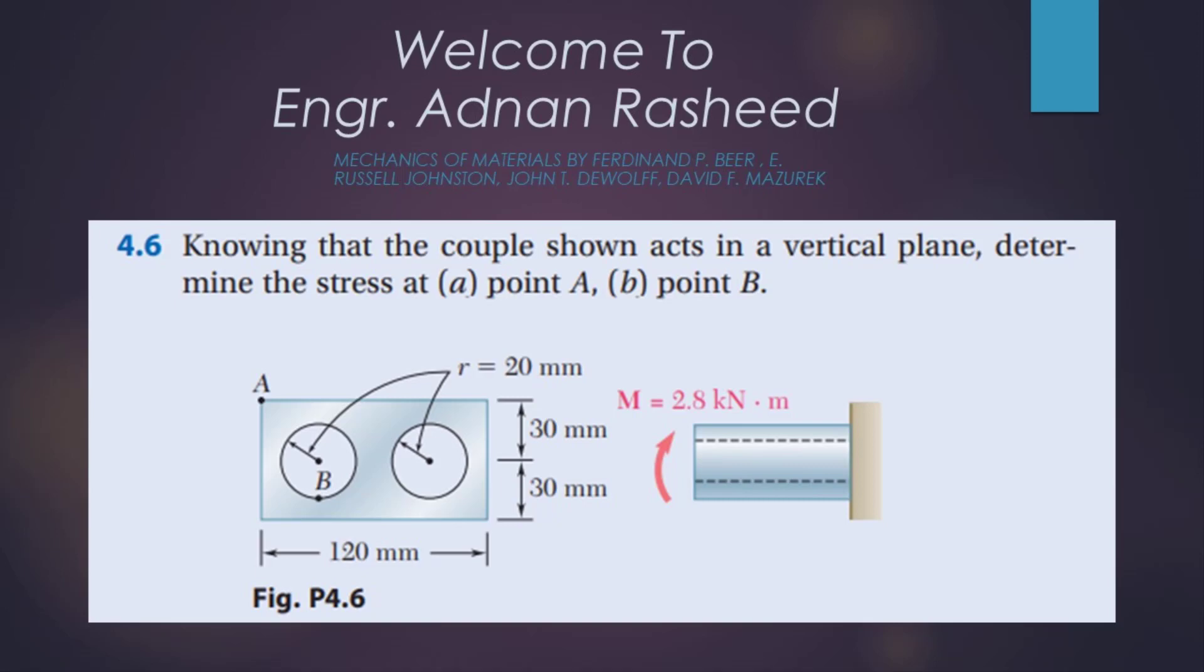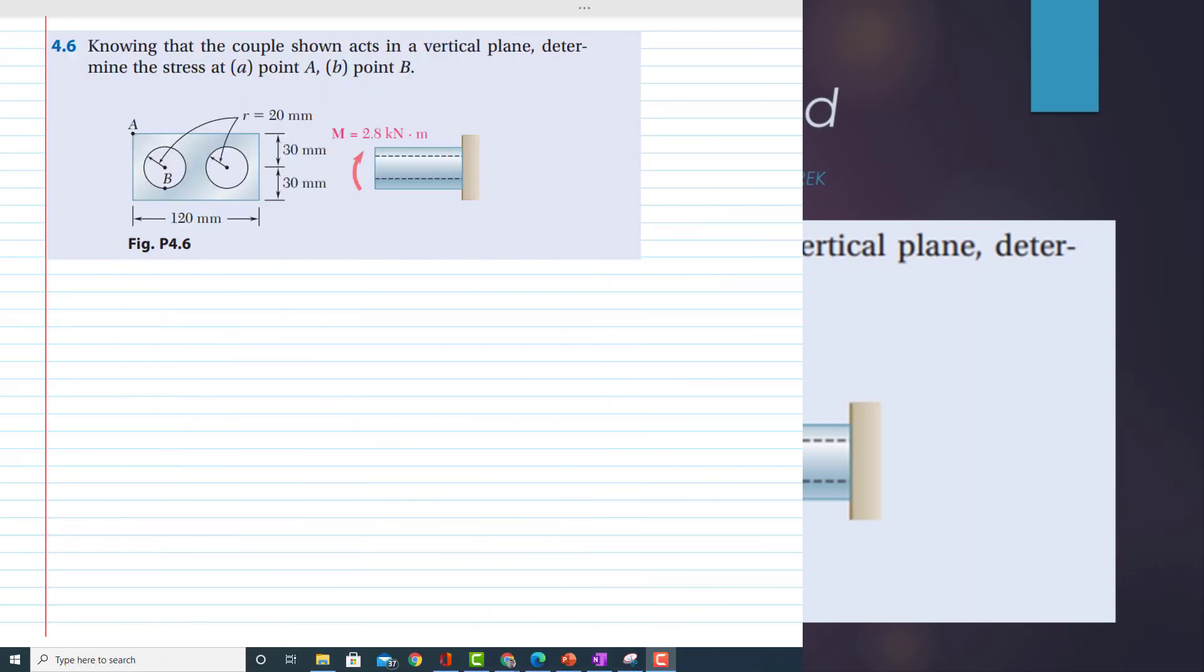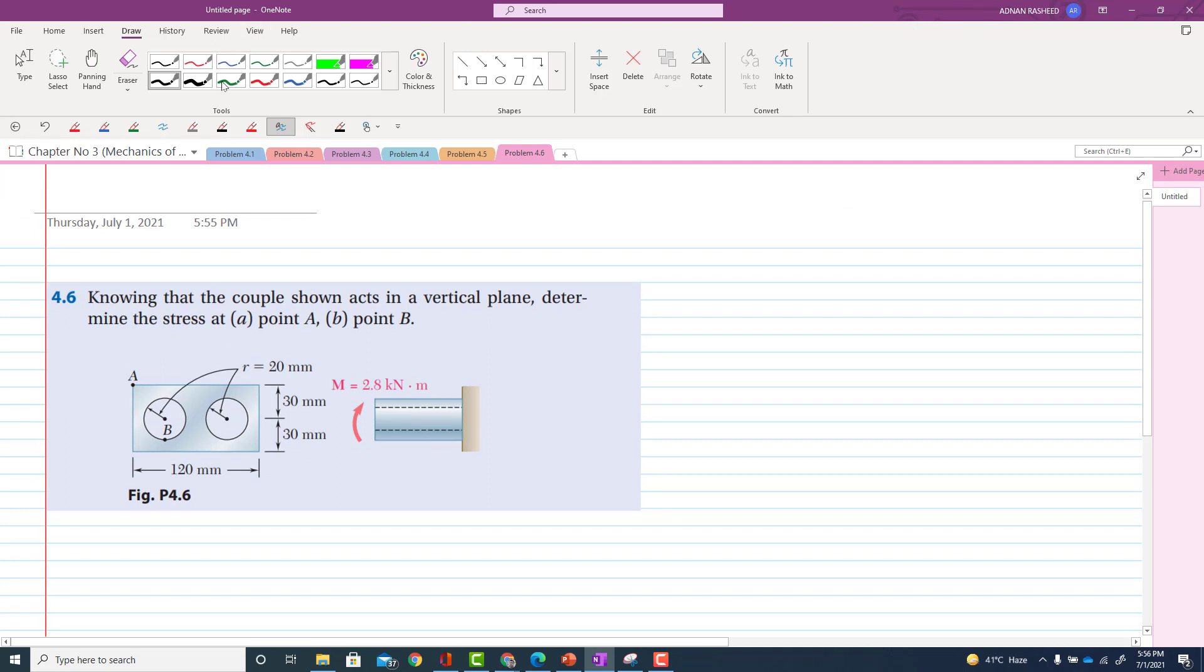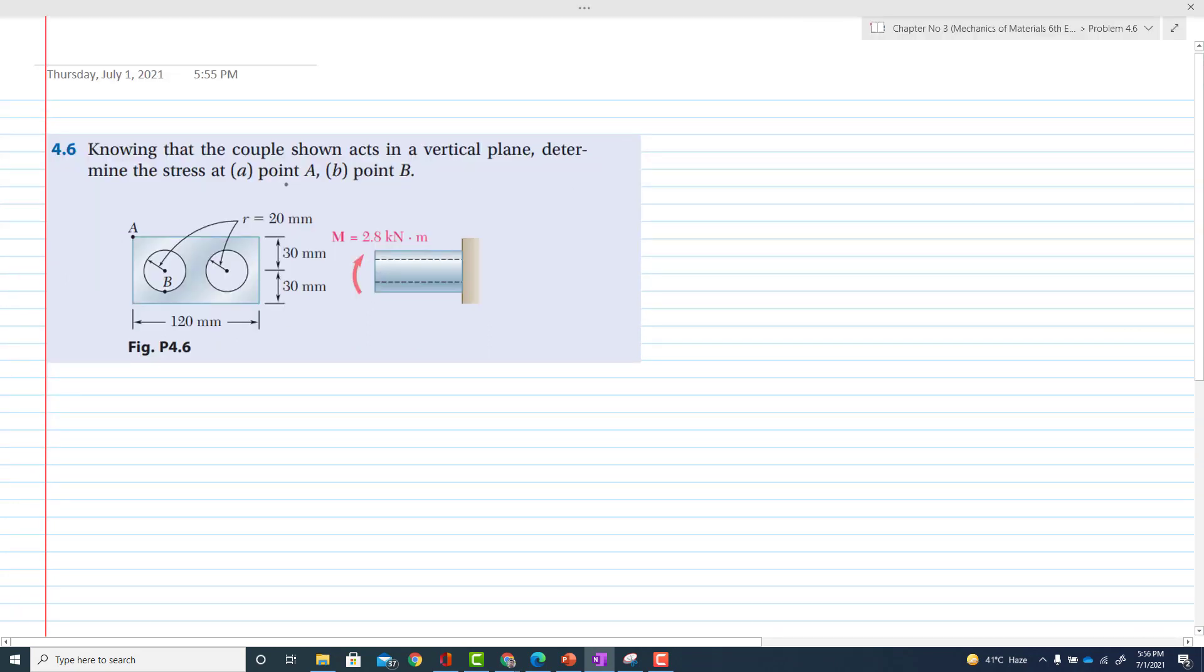Welcome to my channel. If you like my videos, then kindly subscribe, like, and watch. Thank you. Let's start with problem 4.6. The statement of the problem is that knowing that the couple shown acts in a vertical plane, determine the stress at point A and point B.